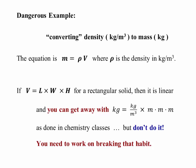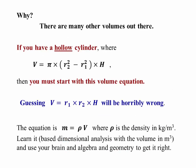You need to break that habit for real because volumes are not just length times width times height. There are lots of other volumes out there. If you have a hollow cylinder, the formula for that is pi times the quantity R2 squared minus R1 squared plus parent times the height, where R2 is the outside radius and R1 is the inside radius. If you want to get anything that resembles the correct answer, you've got to start with the equation for the volume of a hollow cylinder, period, end of story. If you guess it needs to be R1 times R2 times H, because each of those things are in meters, you're going to get a ridiculously wrong answer. You must start with an equation, rho times V, where rho is the density and volume is whatever the volume needs to be, where you use your brain, algebra, and geometry to get the right result.